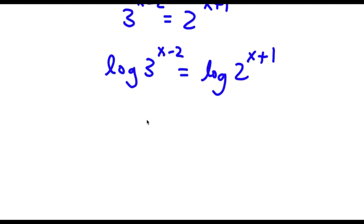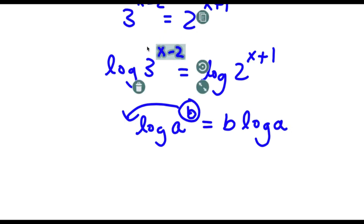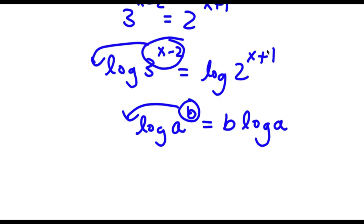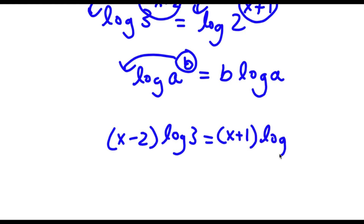Now if I have something in the form log a to the power of b, I can simply move this exponent b to the front of the logarithm, so this equals b times log a. So I can move x minus 2 to the front and x plus 1 to the front. Now I have x minus 2 times log 3 is equal to x plus 1 times log 2.